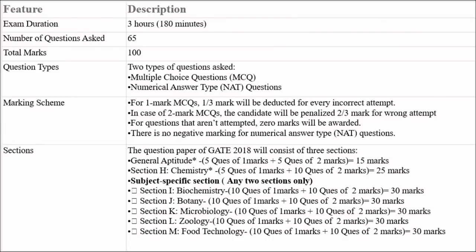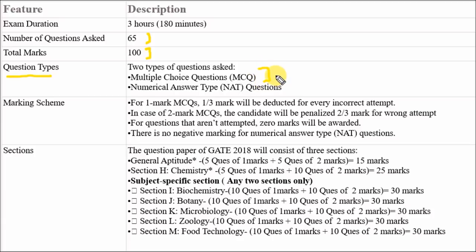This is the paper pattern for the GATE LifeScience paper. The duration of the exam is 3 hours. The total number of questions asked in the paper is 65, and the total marks allotted is 100. Two types of questions are asked: MCQs, where 4 options are given, and numerical answer type, where you have to enter the answer using a virtual keypad.